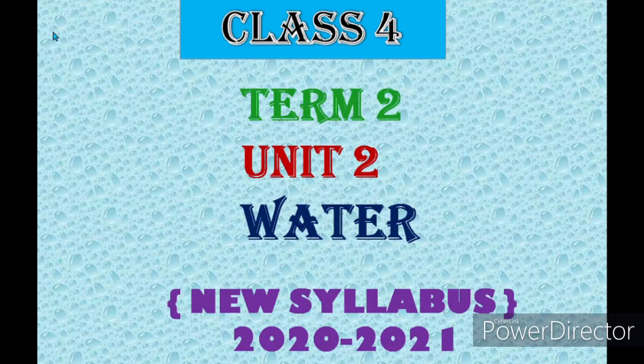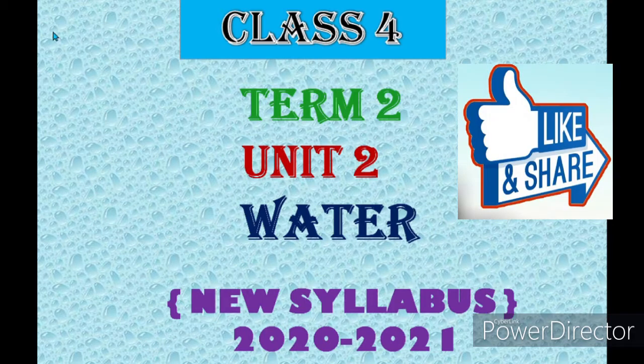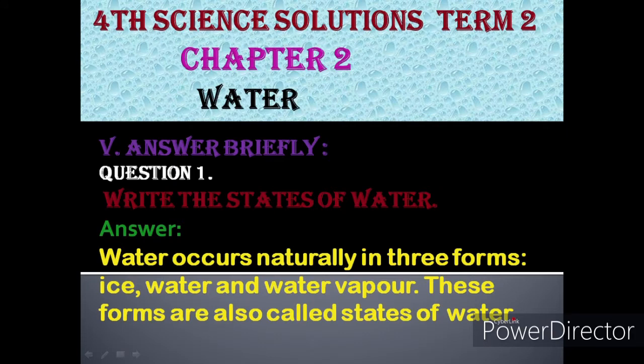Students, welcome to my channel. In this class we are going to see about Class 4 Science, Term 2. Lesson back exercises from Letter Answer Briefly. Question 1: Write the states of water. Answer: Water occurs naturally in three forms — ice, water, and water vapor. These forms are also called states of water.